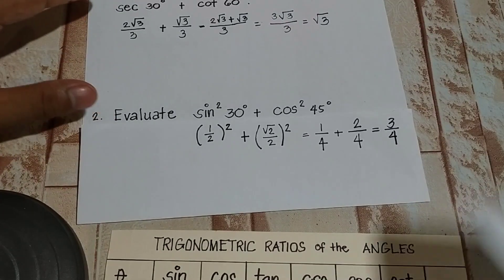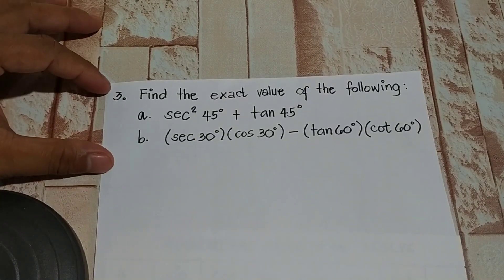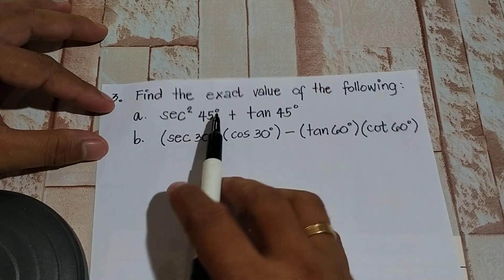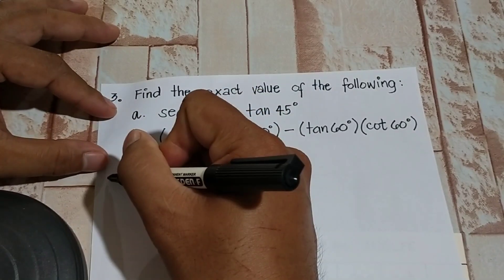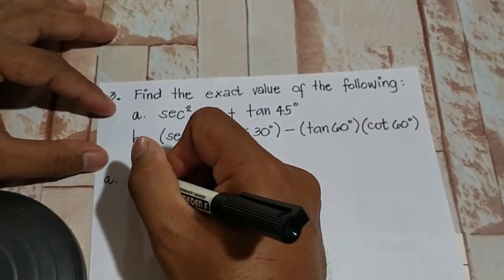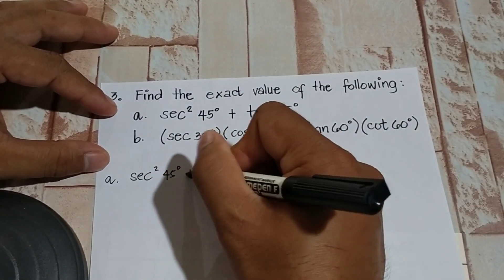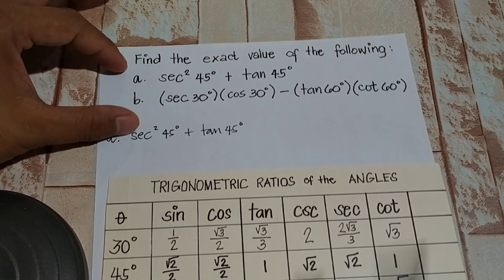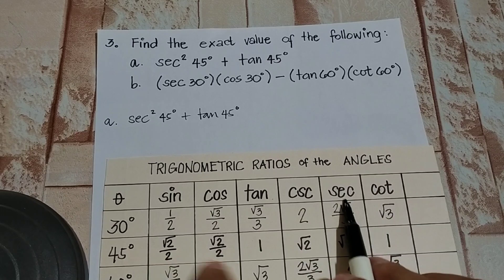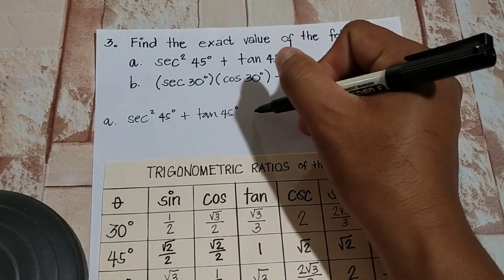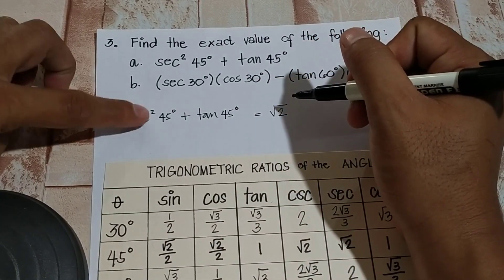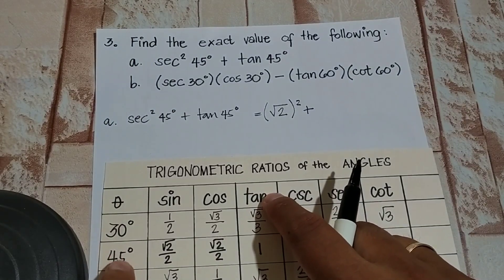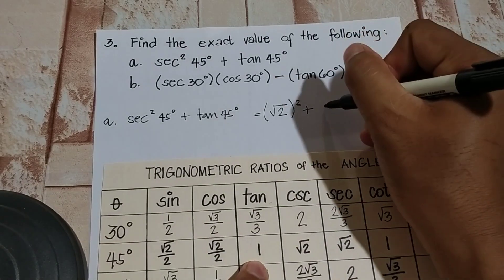Let's proceed to problem number 3. Find the exact value of the following. Starting with letter A: secant squared 45 degrees plus tangent 45 degrees. Going back to our table, secant 45 is equal to square root of 2 — take note, it's squared — plus tangent 45, which equals 1.